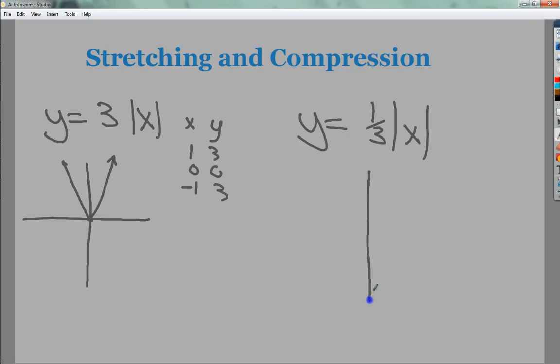On the other side, if I have 1 third x, 0 and 0 work perfectly. But I'm starting to get a little less steep. So I end up with something that looks a lot flatter, compressed down. That's the difference between stretching and compression in terms of the absolute value.